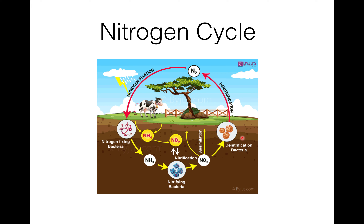Denitrifying bacteria like Clostridium or Pseudomonas, nitrogen-fixing bacteria, and nitrifying bacteria all have their individual roles in the nitrogen cycle. Examples of nitrogen-fixing bacteria are diazotrophs, Azotobacter, and Rhizobium. Nitrifying bacteria include Nitrosomonas — which converts ammonia into nitrite — and Nitrobacter — which converts nitrite into nitrate.